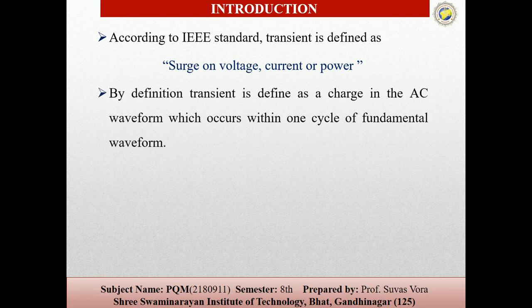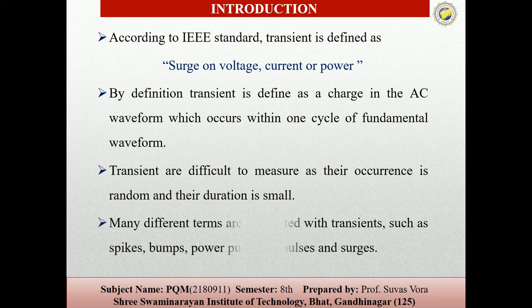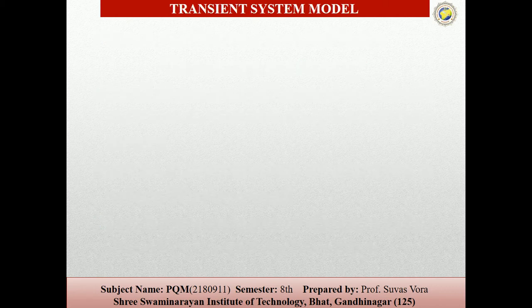The definition states that the change in the AC waveforms which occurs within one cycle of the fundamental waveform. Transients are difficult to measure as their occurrence is random and their duration is very small. Many different terms exist: spike, bomb, power pulse, impulse, and surge are also called transient names.